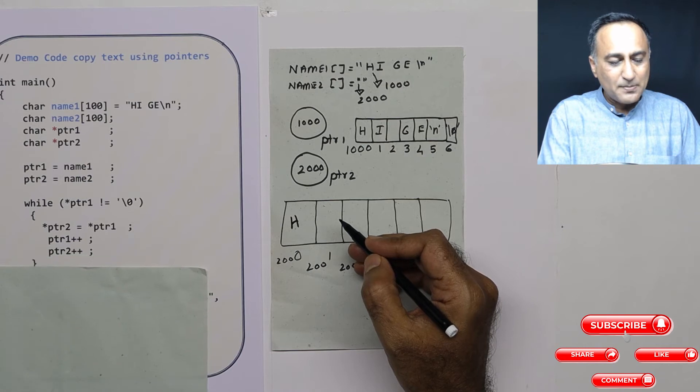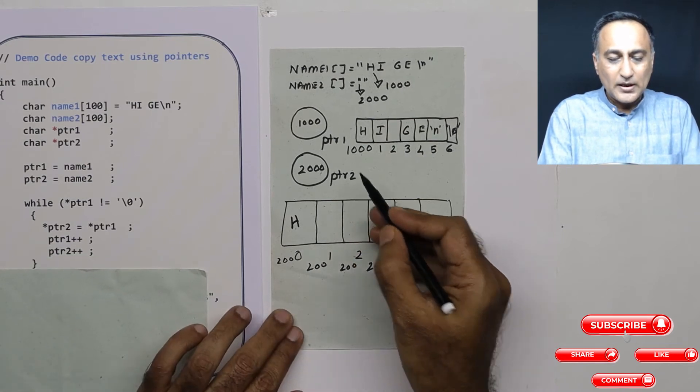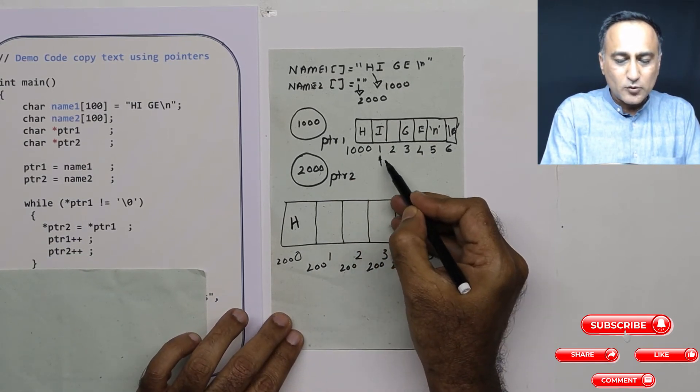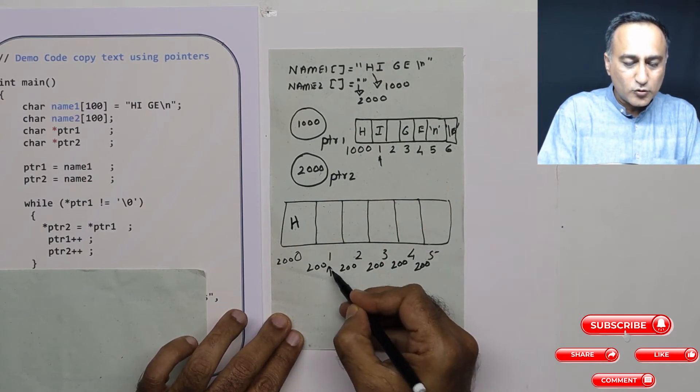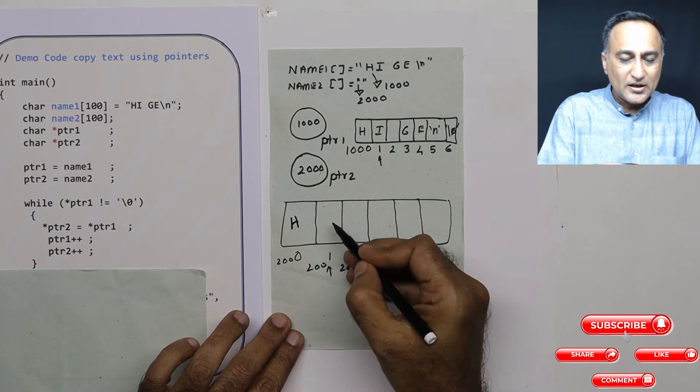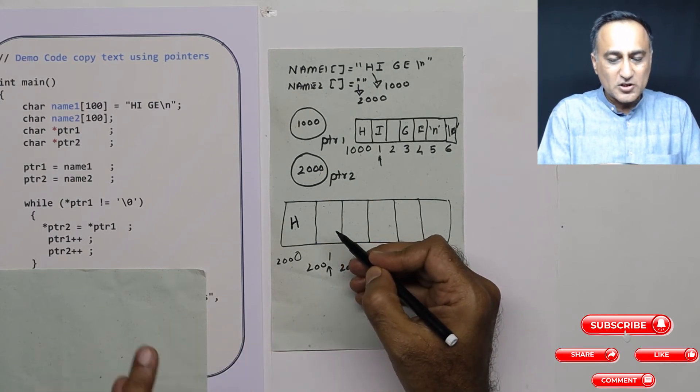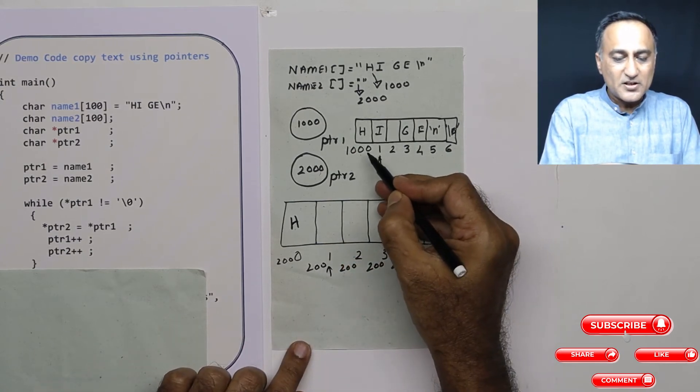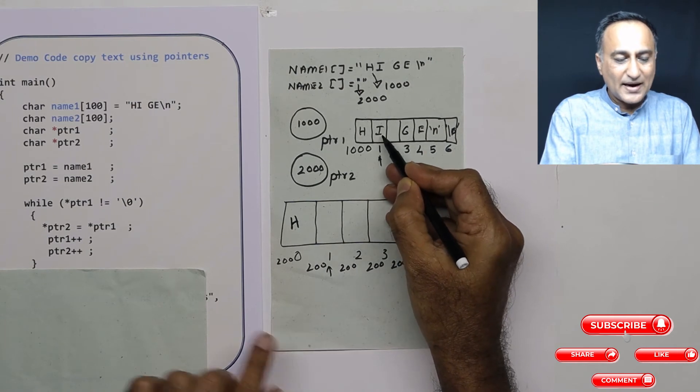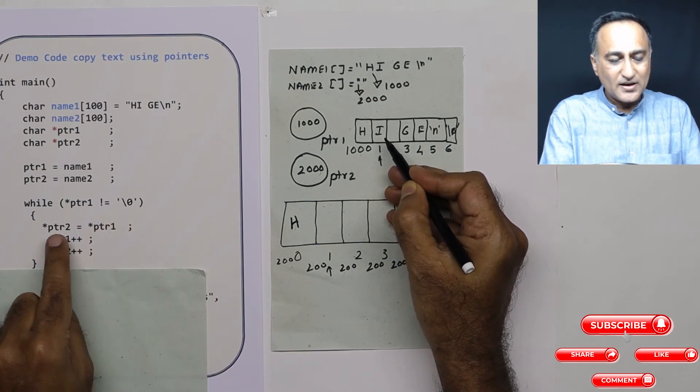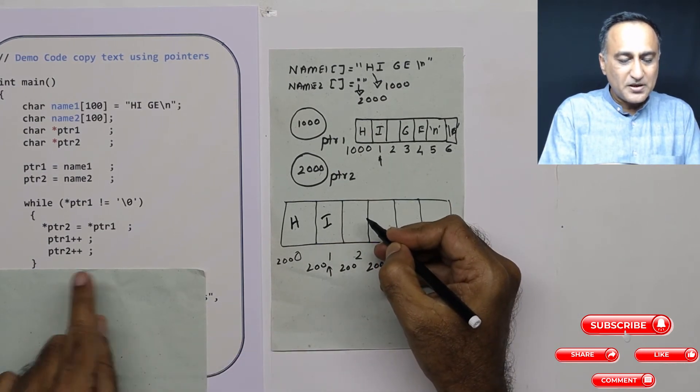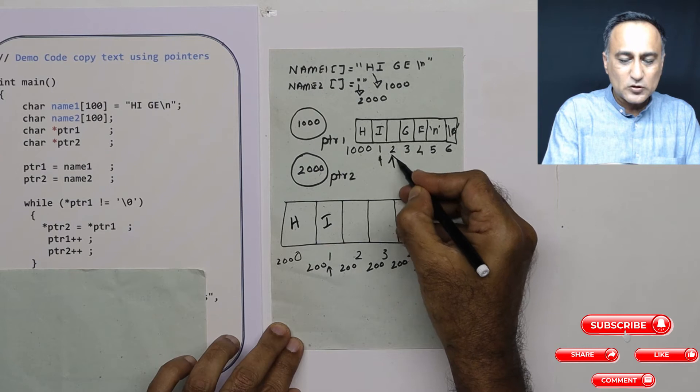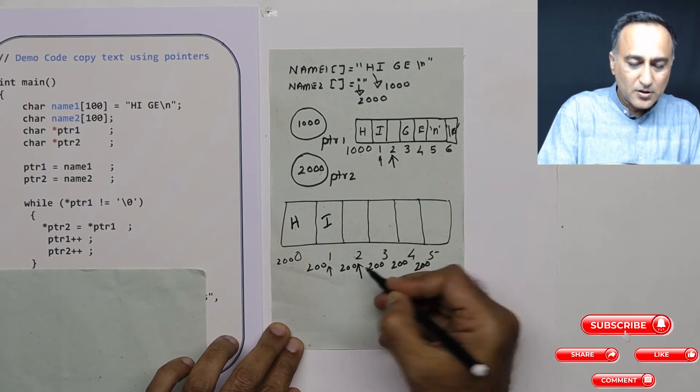Then I am increasing ptr1 and ptr2. ptr1 is now going to come to 1001, ptr2 is also now going to refer to 2001. So in the 2001th location, what is star ptr1? i. It is not equal to null, so this copying happens. So i gets copied here.